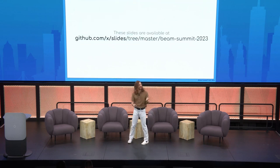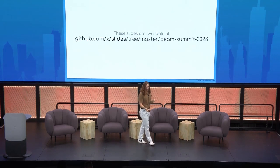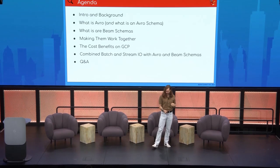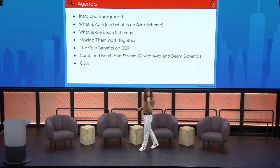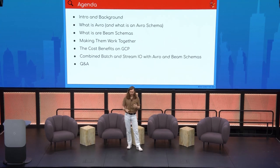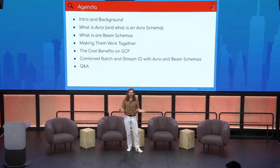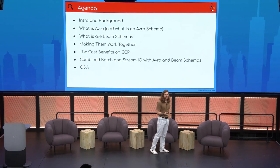All these slides are available on GitHub. You just pull them down and look at them, and I'll have this URL at the end as well. There's a bunch of code you might want to copy. Agenda: I'm going to give you a quick intro and then talk about what is Avro and what are Beam Schemas. We're going to talk about making them work together, which is a big part of this talk, and then talk about some of the benefits of doing this.